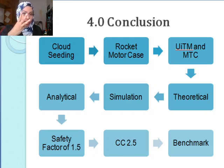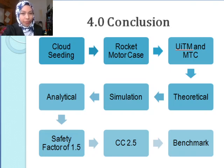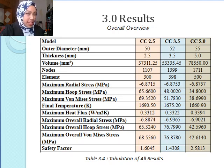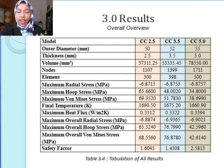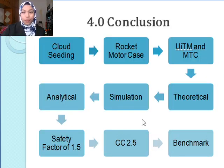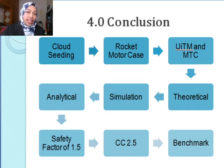After computing three different thicknesses, we found that there is a minimum safety factor requirement of 1.5 from MTC Engineering. The safety factor of 1.4308 from CC3.5 is not desirable, so it is out of question. CC2.5 and CC5.0 are in consideration. However, weight plays an important role in small-sized rockets — the lighter, the better, and it will also be less costly. Therefore, CC2.5 is the best choice. This study serves as a benchmark for future studies, in which there are many things to manipulate to find the more accurate solid rocket motor casing choice.